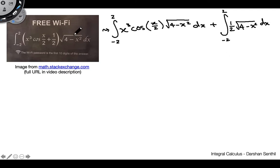And again, all I did, I distributed the square root of 4 minus x squared to each of these terms, and then split this up into a sum of integrals here. Nothing too fancy there.